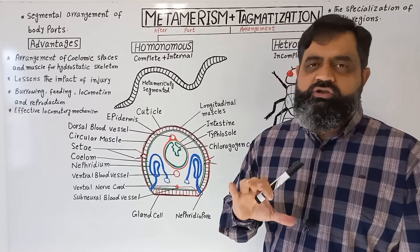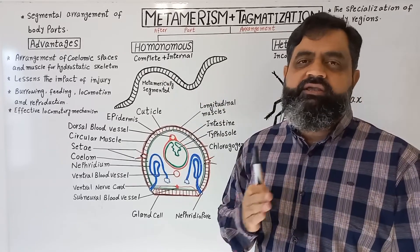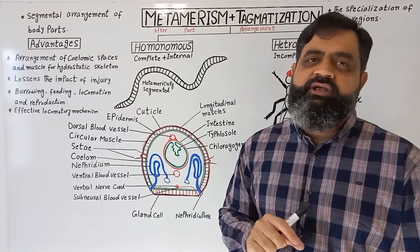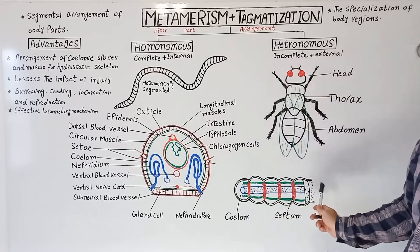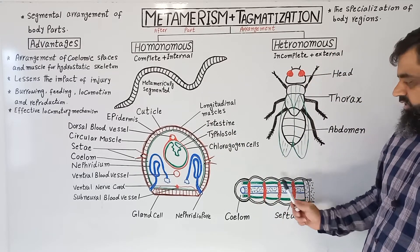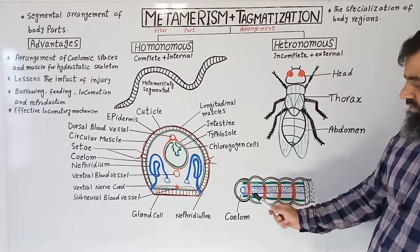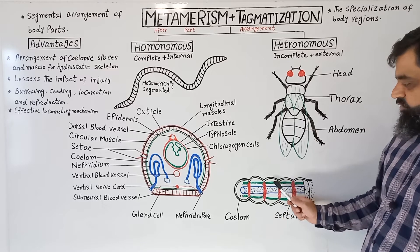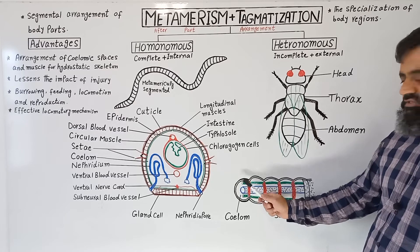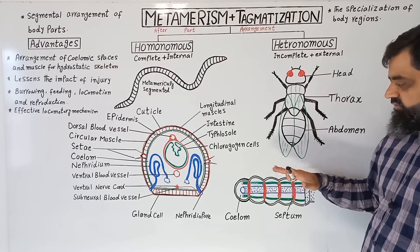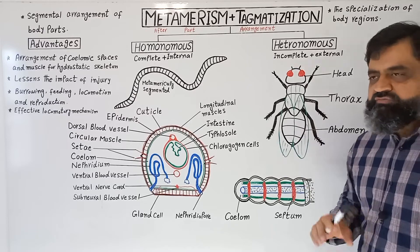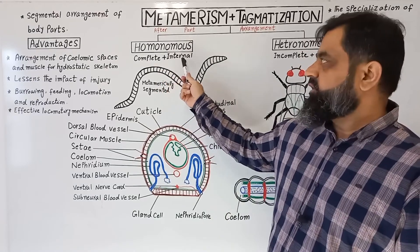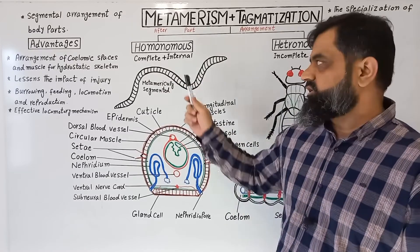Most of these body organs are repeated in each segment, and they work independently in each segment. The digestive system, which is tube-like, starts from the mouth and ends at the anus, passing through each segment to make a tube-like structure inside the body. As you can see in this diagram, these are the segments visible externally, and internally the segments are separated by septa. In the center is the digestive system in the form of a gut, dorsal blood vessel, ventral blood vessel, and a cavity known as coelom filled with coelomic fluid. When a body is divided metamerically from outside and inside, that is known as complete or homonomous metamerism.